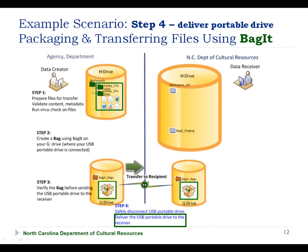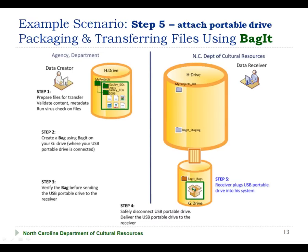Now that the portable disk has been disconnected from the sender's computer, he can transfer that drive to the data receiver. If instead of using a portable disk device the sender is transferring files via a shared network drive, there is no other transfer step needed, since once the bag is created on the shared network drive it will be immediately available to the receiver. Now that the receiver has received the portable disk, she will plug it into her computer via the USB attachment. If the file has been transferred via a shared network drive, the receiver will not have to go through this step, as she will be able to access the bag directly through the shared drive. We will assume that the portable disk has been attached to the G drive on her computer.